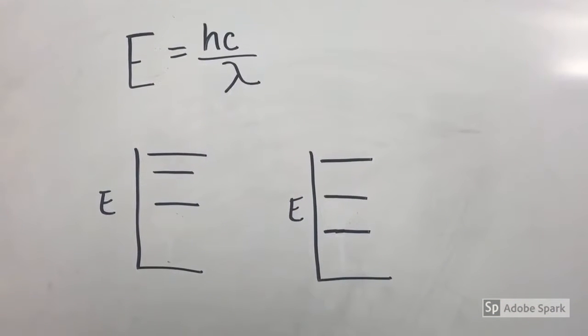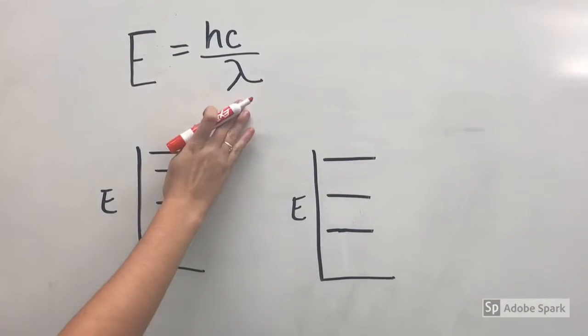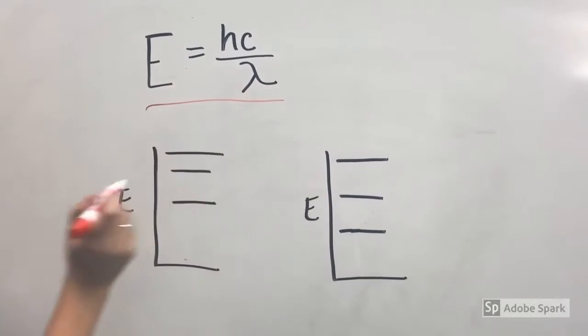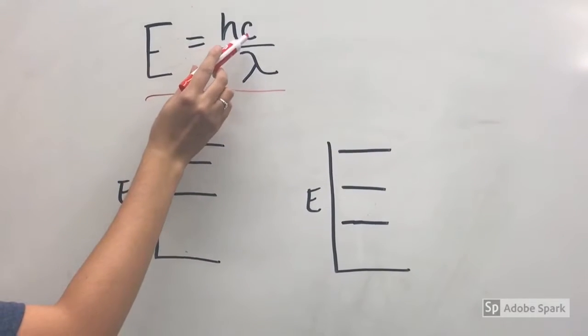Electrons absorb photons of discrete wavelengths, and these photons have specific energies, given by E equals hc over lambda, where h is a constant and c is the speed of light.